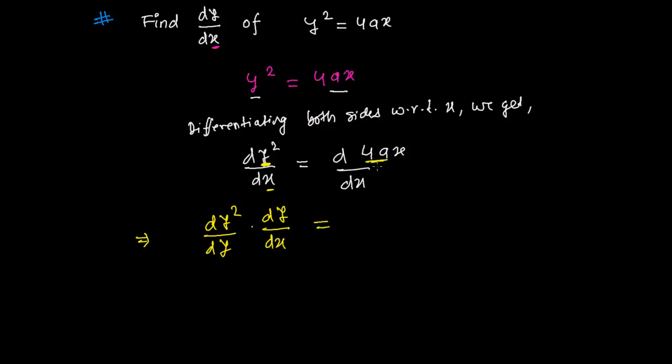And in next step now see 4a is a constant so let me put outside, and since this is x and x, so derivative of x with respect to x is only 1.